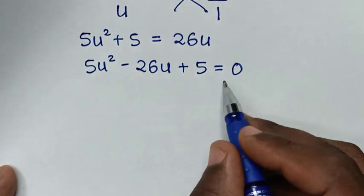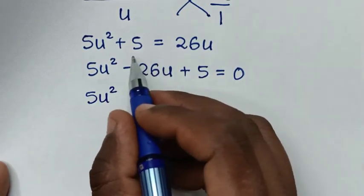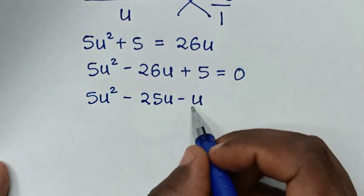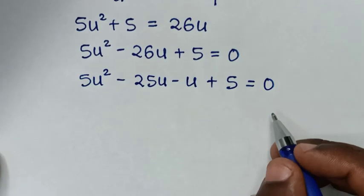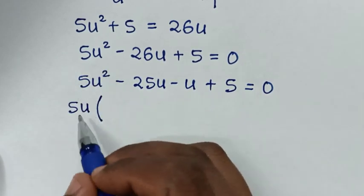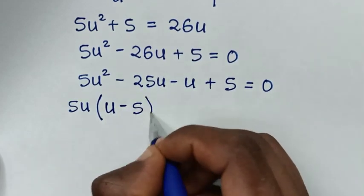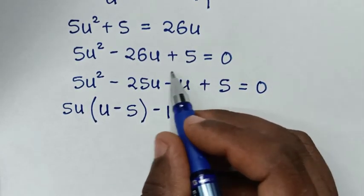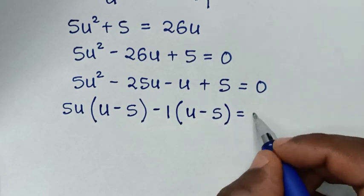This quadratic equation can be solved by grouping and factorization. We rewrite 5u squared minus 26u plus 5 equals 0, splitting minus 26u as minus 25u minus u. Then 5u is common in the first two terms: 5u(u minus 5), and negative 1 is common in the last two terms: negative 1(u minus 5), equals 0.